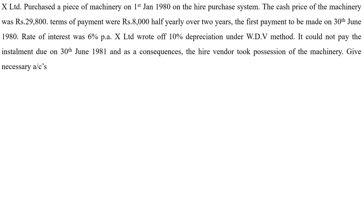Let's understand what details are given in the question. X Limited is the hire purchaser — it purchased the machinery. The cash price is 29,800. The installment amount is 8,000, payable half-yearly every 6 months. The rate of interest is 6% per annum, and depreciation is 10%. It could not pay the installment due on 30th June 1981, so the hire purchaser has defaulted. The hire vendor took possession of the machinery — this is a complete repossession problem.